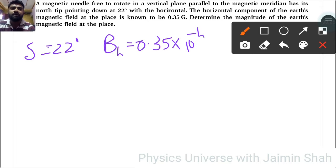A magnetic needle free to rotate in a vertical plane parallel to the magnetic meridian has its north tip pointing down. Delta is equal to 22 degrees with the horizontal. The horizontal component of earth's magnetic field at the place is known as BH equals 0.35 into 10 raised to minus 4 Tesla. Determine the magnitude of the earth's magnetic field at the place.